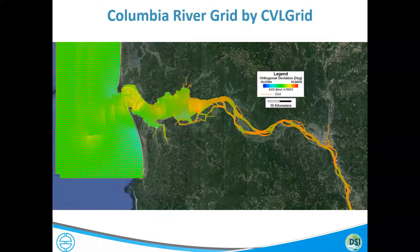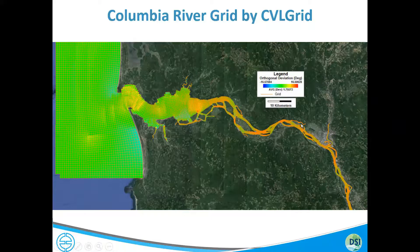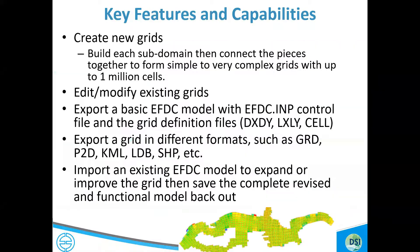This is an example of the Columbia River estuary and a small section of the open ocean grid. You can see the curvilinear grid with different areas of grid refinement following terrain. We have islands, and all of this complexity is built up with CBL Grid and can be directly utilized by EFDC Explorer.